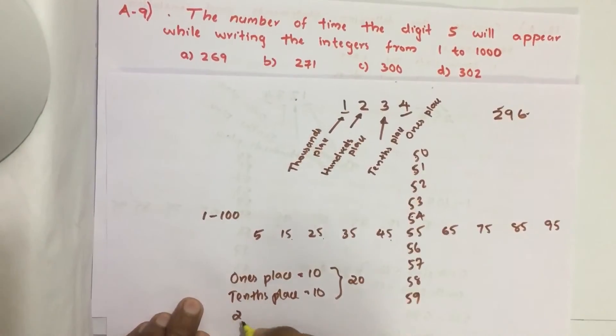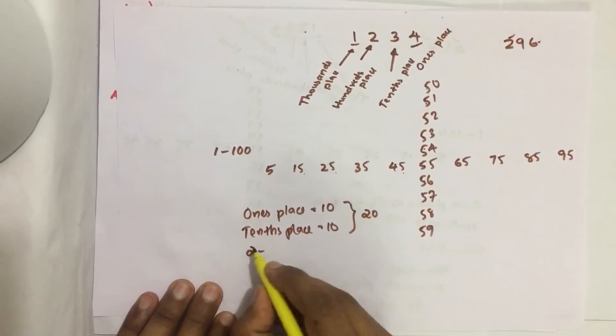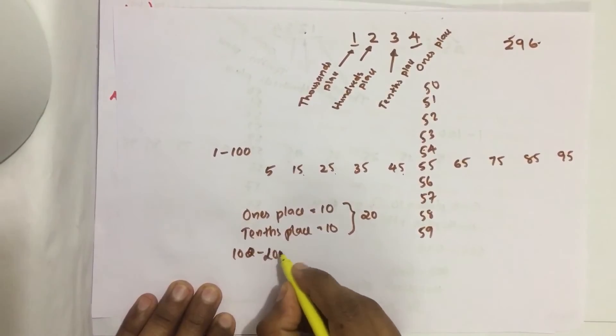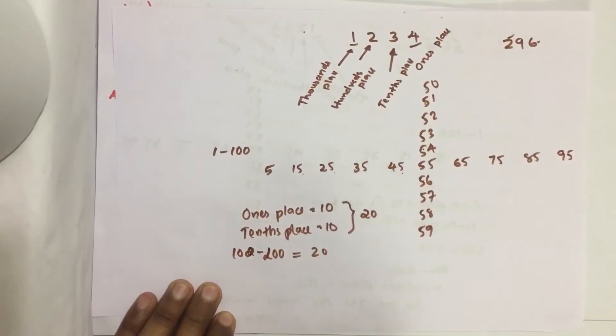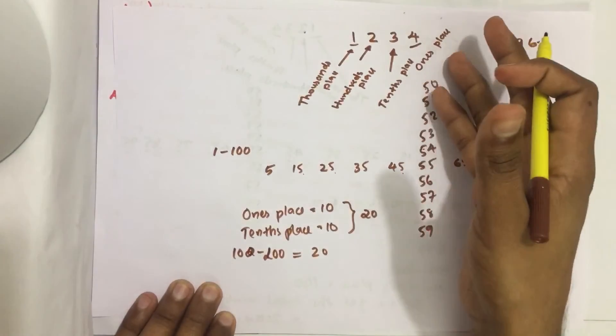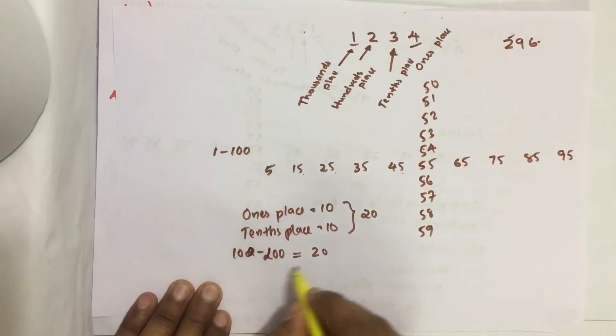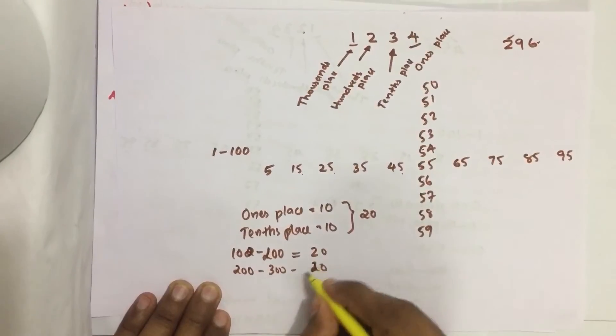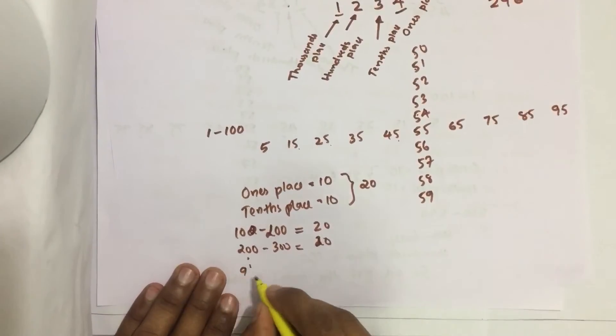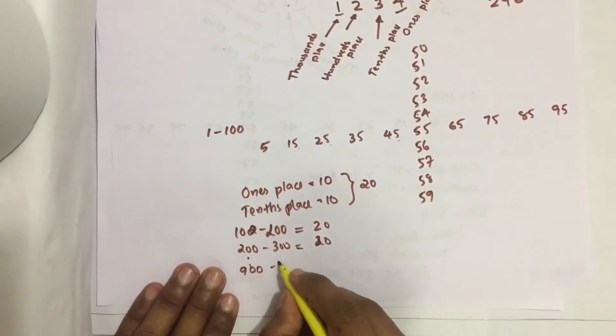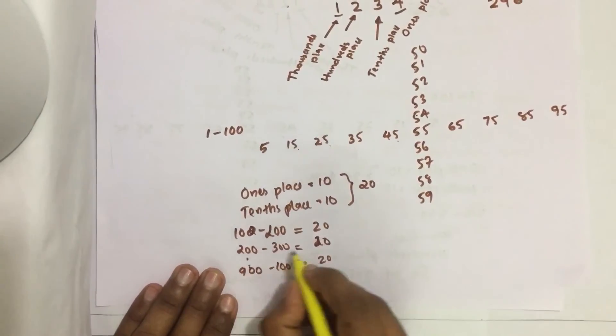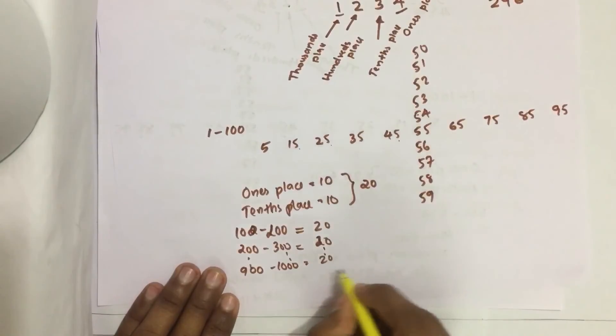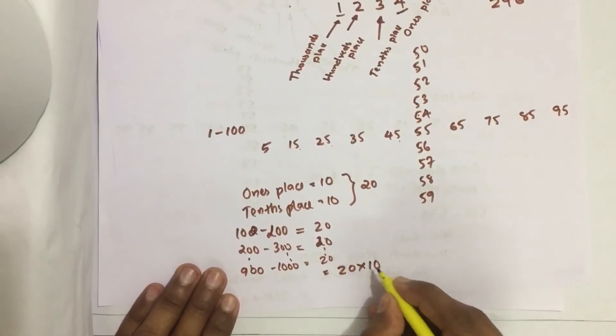Similarly, in 100 to 200, there are 20 5's at the position of 1's place and 10's place. In 200 to 300 there are 20, like this up to 900 to 1000 there are 20. So total, how many? Ten 5's are there. 20 into 10, that's equal to 200 5's are there in 1's place and 10's place while counting 1 to 1000.